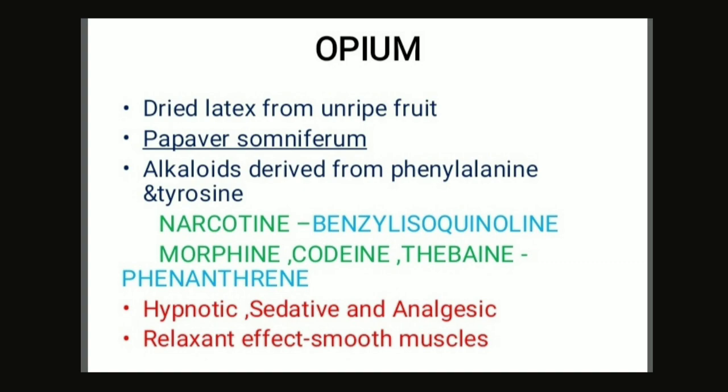Opium's family is Papaveraceae and it contains mainly alkaloids derived from phenylalanine and tyrosine — narcotine, benzylisoquinoline, morphine, codeine, thebaine, and papaverine. Alkaloids are the basic nitrogenous plant products. Opium belongs to the category of hypnotic, sedative, and analgesic, in which the action is mainly due to morphine. Papaverine has relaxant activity on smooth muscles — intestinal, bronchial, and blood vessels.